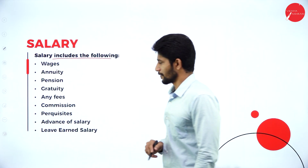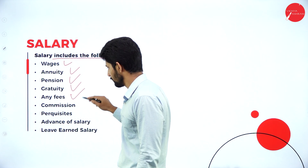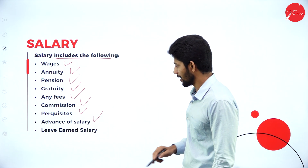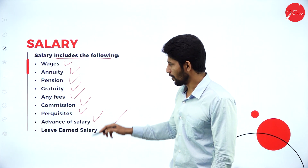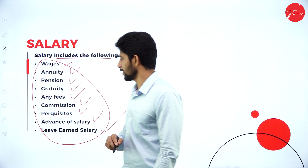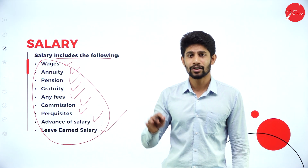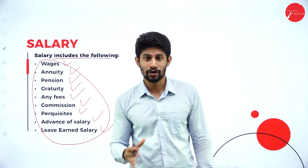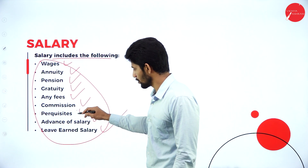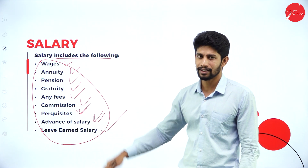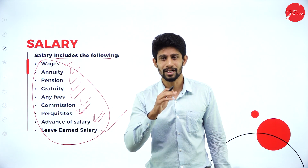The salary includes the wages, annuity, pension, gratuity, any fees, commission, perquisites, advance of salary, and leave earned salary. If all these are provided by your employer to you, all these components will be considered to compute your total annual salary or total gross salary — that is wages, annuity, pension, gratuity, any fees, commission, perquisites, advance of salary, and leave earned salary. These all components are supposed to be considered while computing the income from salary of an individual person.